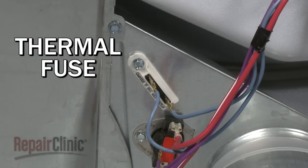Some models will also have a thermal fuse on the blower housing. Poor air flow can cause this fuse to fail. If this happens, the dryer will not heat at all until the fuse is replaced.